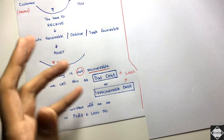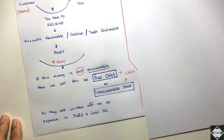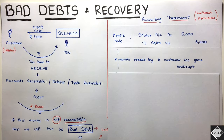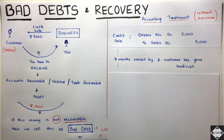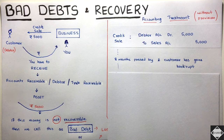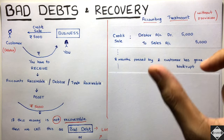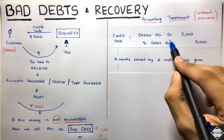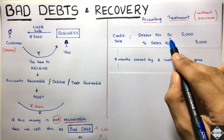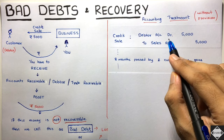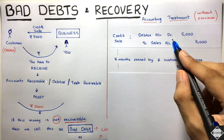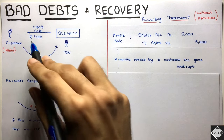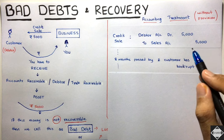Now let's look at the accounting treatment. First, a credit sale is made: Debtor Account debit (or Receivables / Trade Receivable / Customer Account debit) 5000, to Sales Account 5000 — because sales revenue is increasing, you credit it. This is the standard credit sale journal entry.